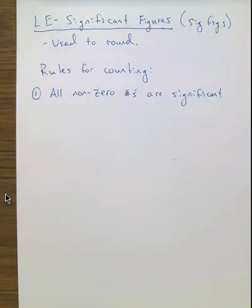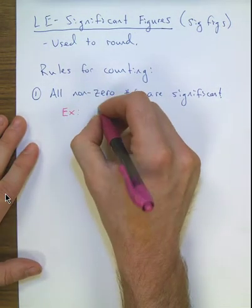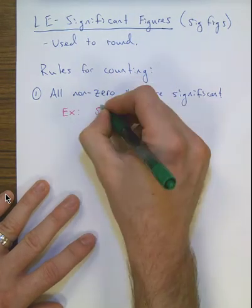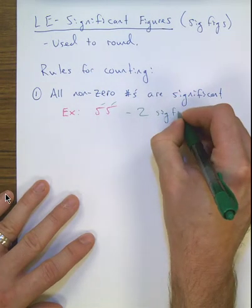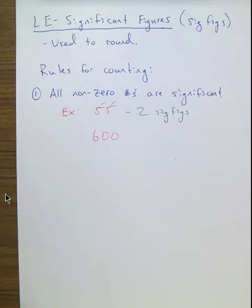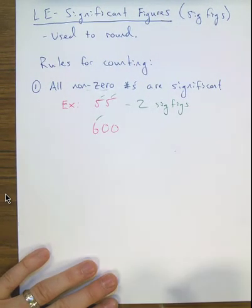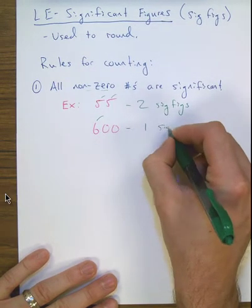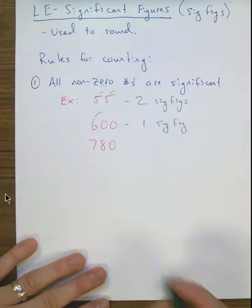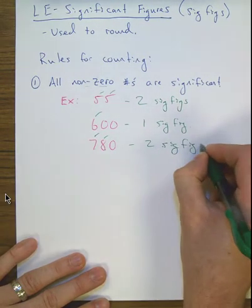For the number 55, neither five is a zero, so I make tick marks — it has two sig figs. For 600, only the six is non-zero and significant; the two zeros are not. That gives one sig fig. For 780, the 7 and 8 are significant, but the zero is not. That gives two sig figs. That's rule number one.